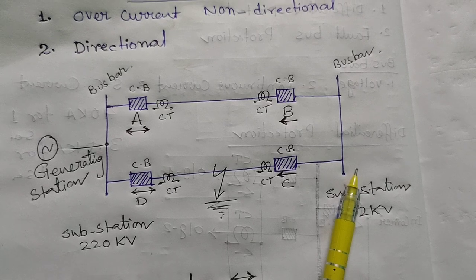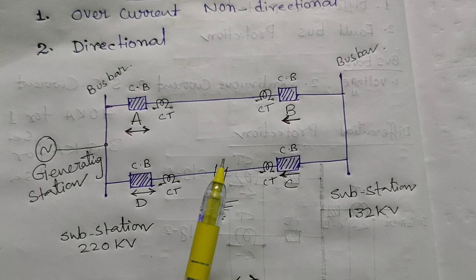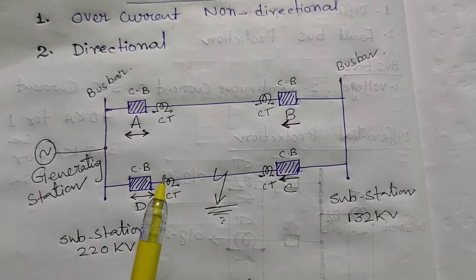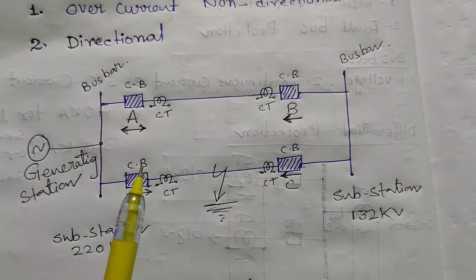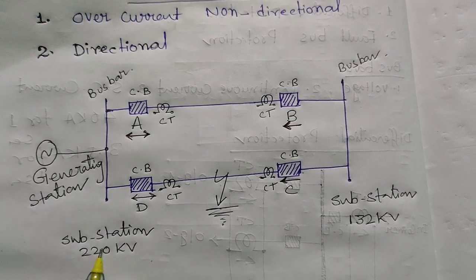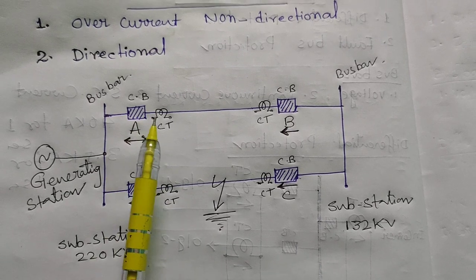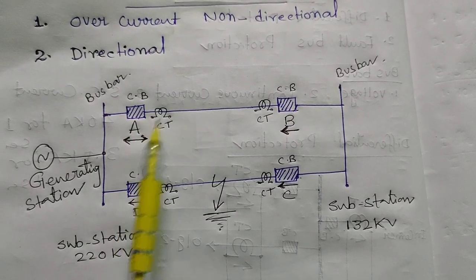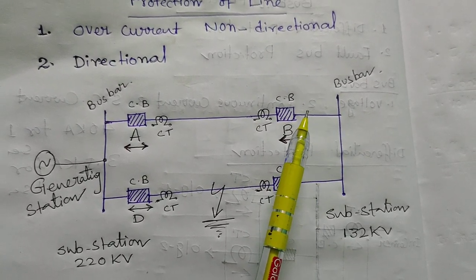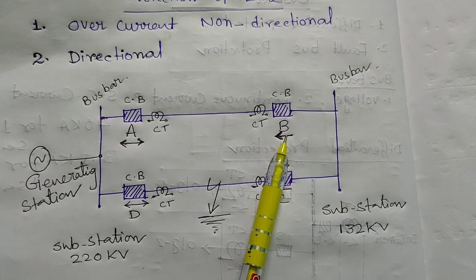Today's topic is how we are applying directional and non-directional relays. At a generating station or 220KV substation we are using a non-directional relay, and at a 132KV substation or the end substation we are using the directional element or reverse power flow element relay.